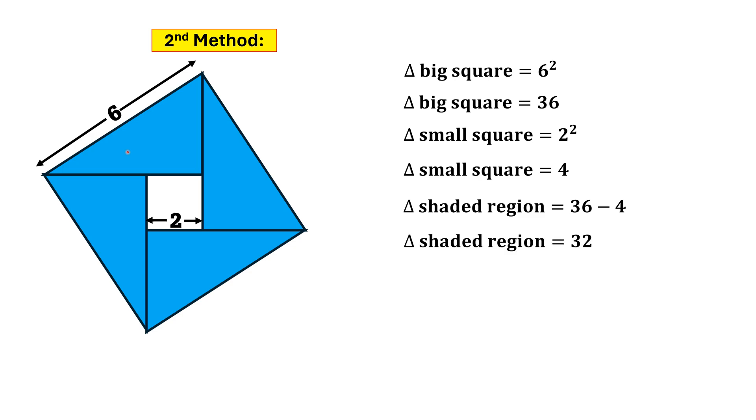Since the shaded area is formed by four identical right triangles, the area of one right triangle will be 32 divided by 4, and that is 8 square units.